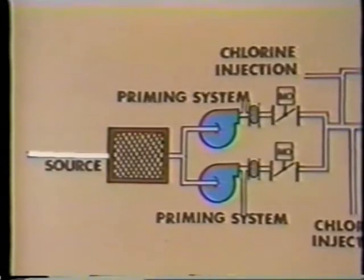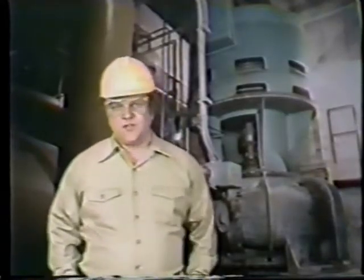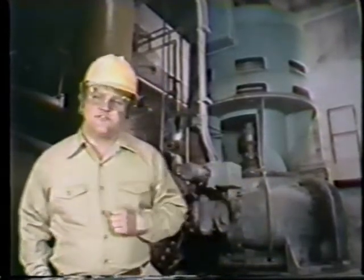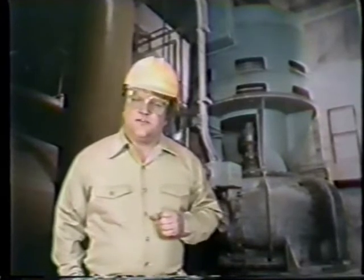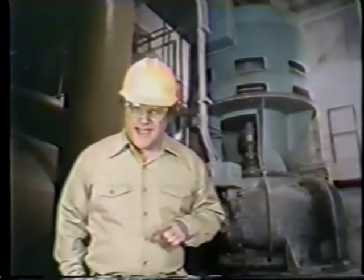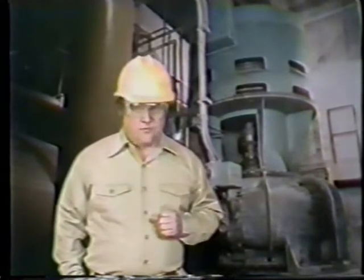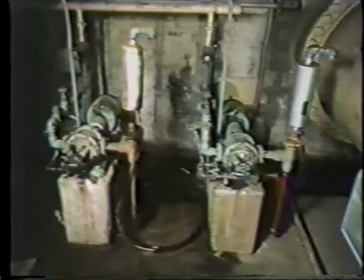After flowing through the screens, the water branches off and flows through the circulating water pumps. Circulating water pumps are generally large centrifugal pumps capable of pumping thousands of gallons of water per minute. Most centrifugal pumps must be completely filled with water, or primed, in order to operate properly. Priming doesn't pose as much of a problem for pumps that are at or below the level of the water source, but often circulating water pumps are above the water level. For these pumps, a priming system will be provided.